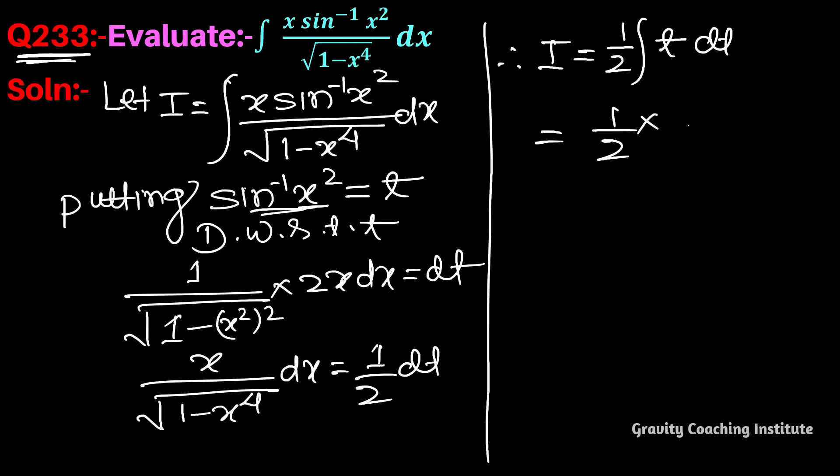The integration of t is t square by 2, so it equals 1 by 2 times half, which is 1 by 4, times sine inverse x square whole square plus c.